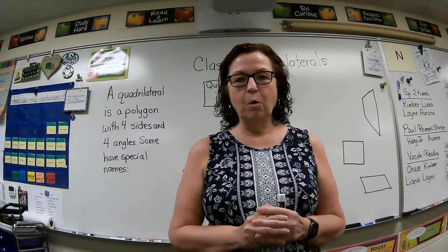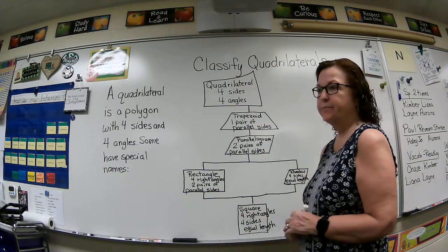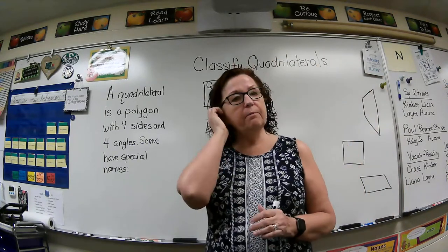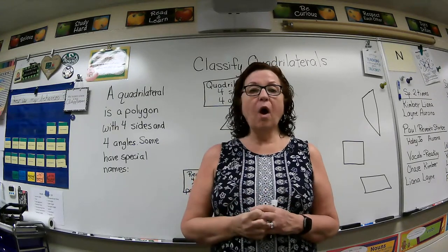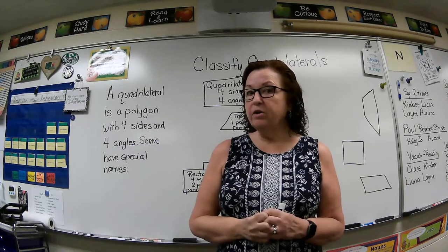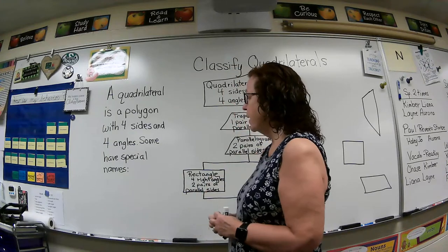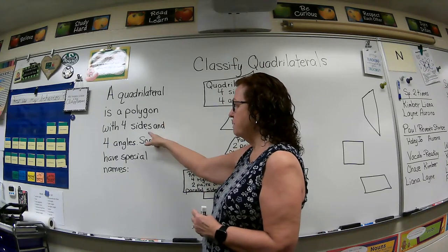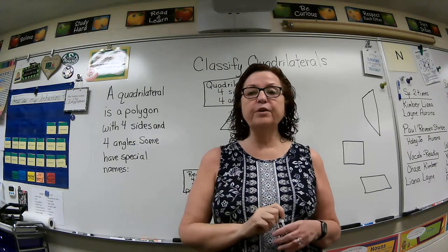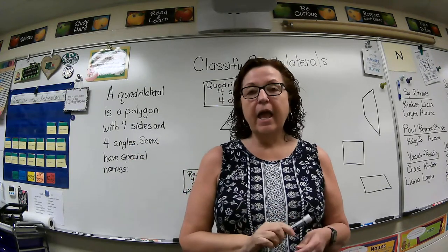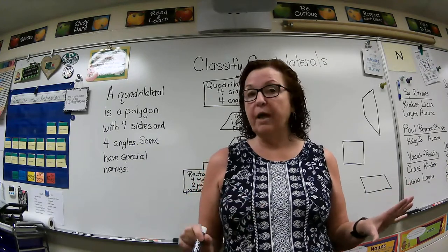Today is lesson 10.4 and we're going to be classifying quadrilaterals. You may remember that quad means four. So when we're doing quadrilaterals, we are talking about four-sided polygons. A quadrilateral is a polygon with four sides and four angles, and some of them have special names, which we're going to learn today.